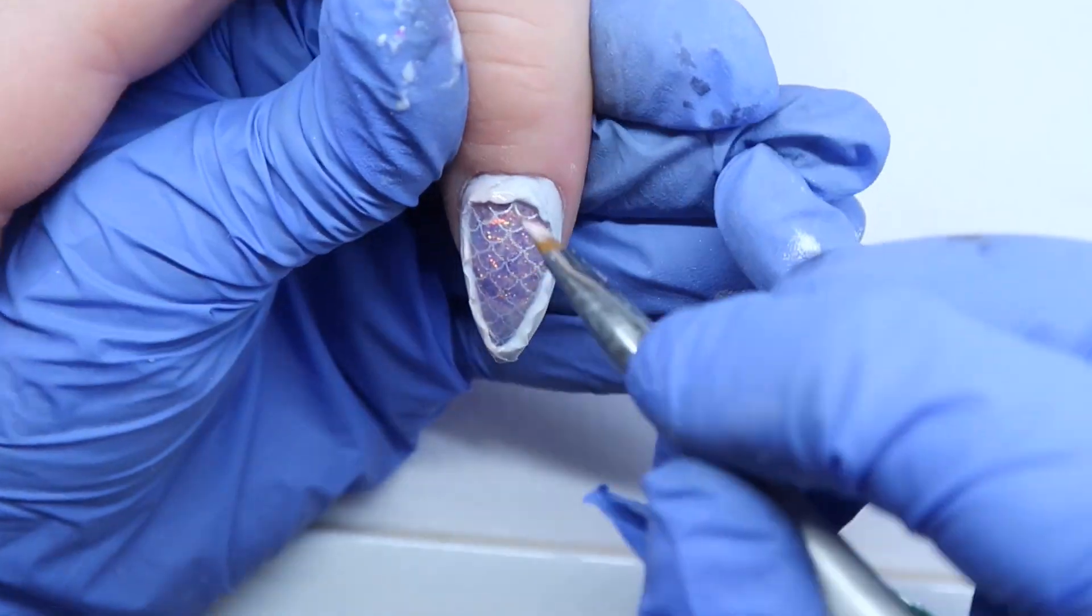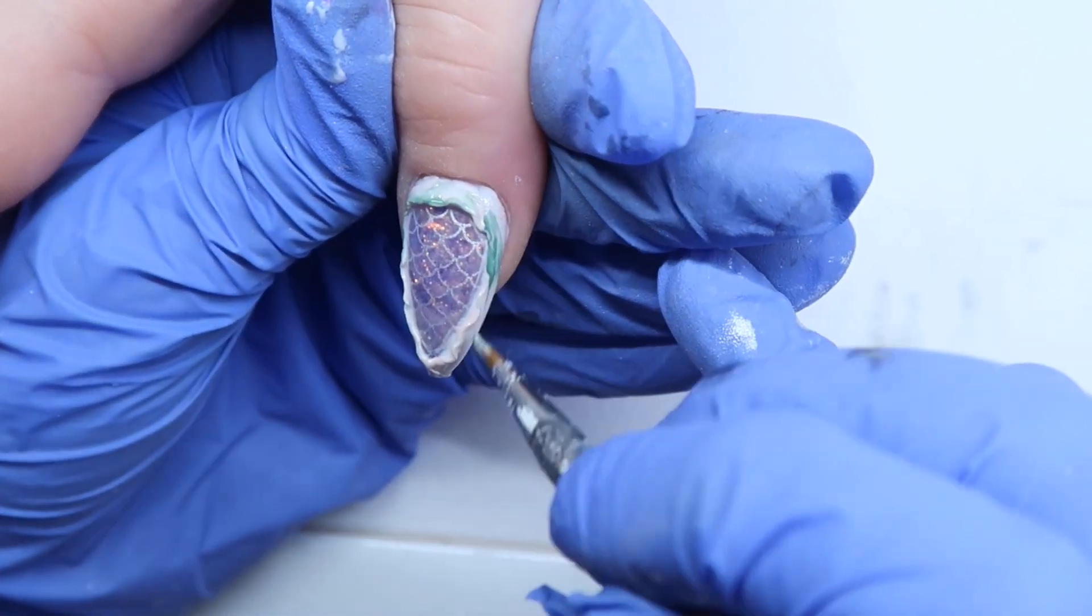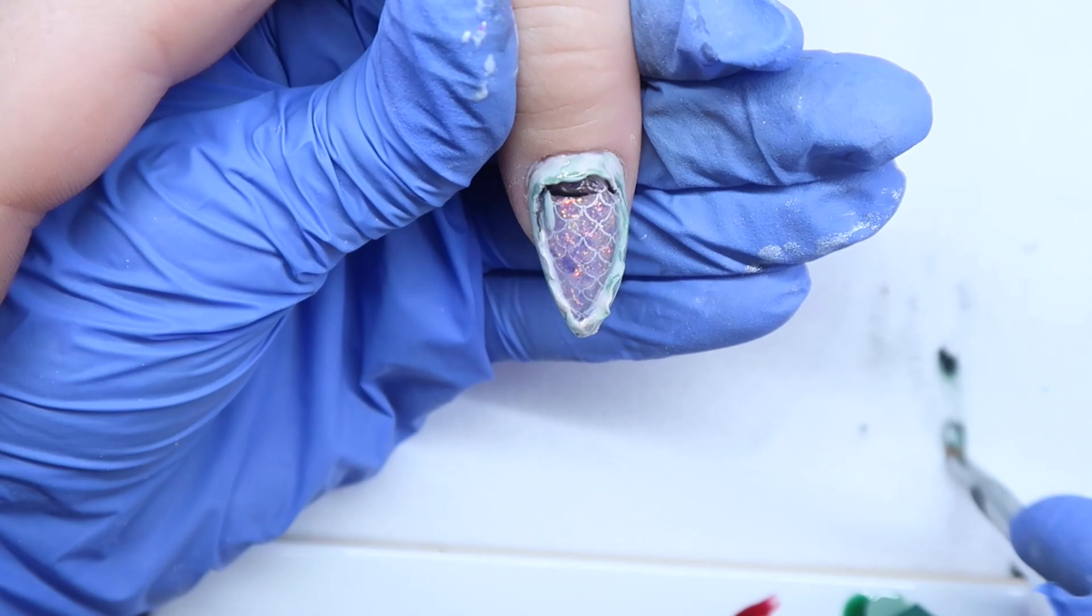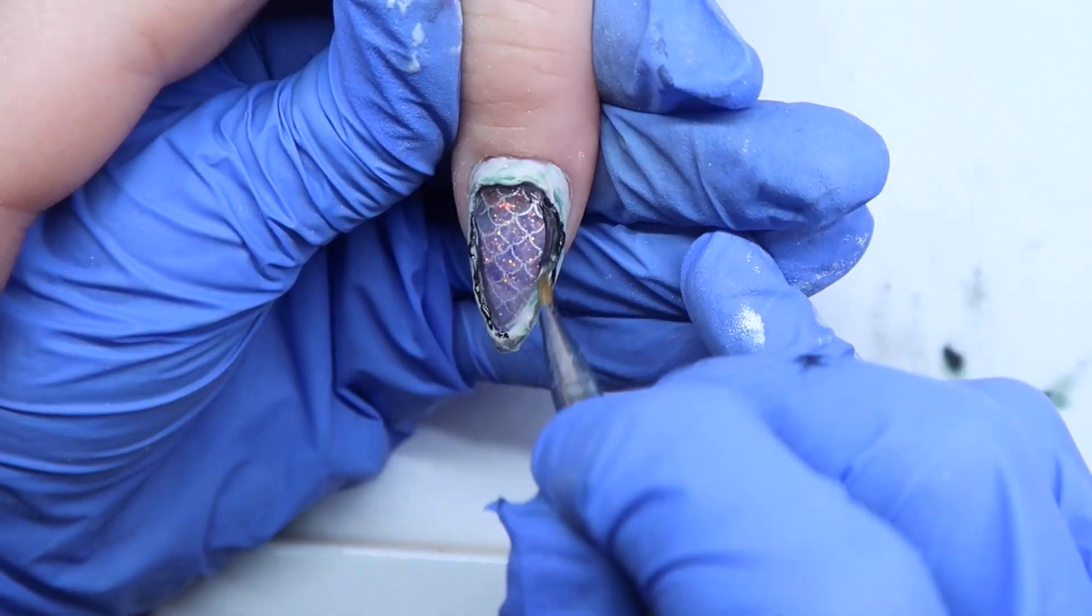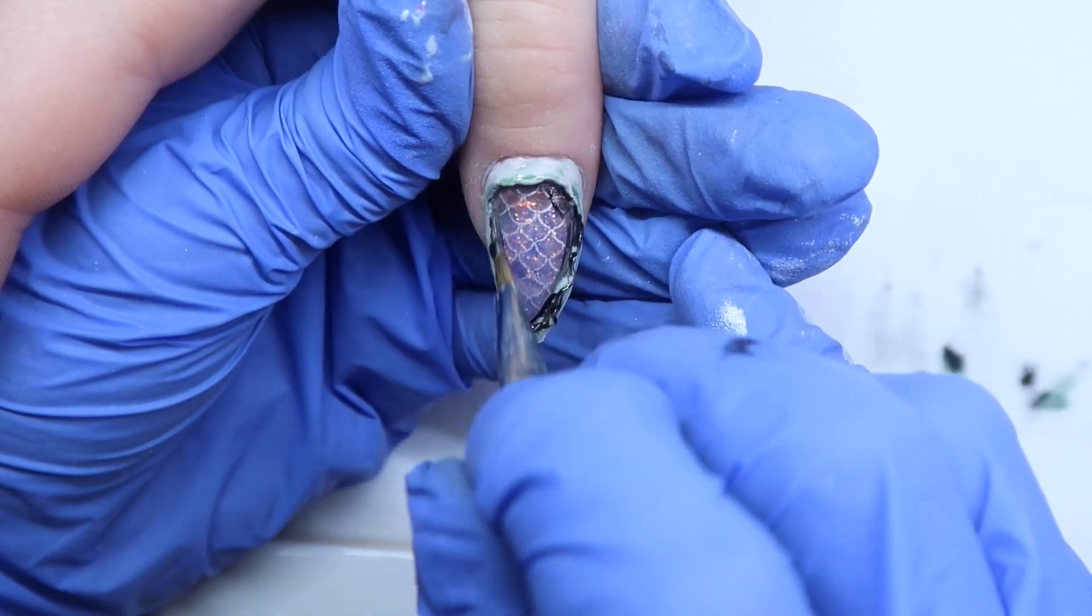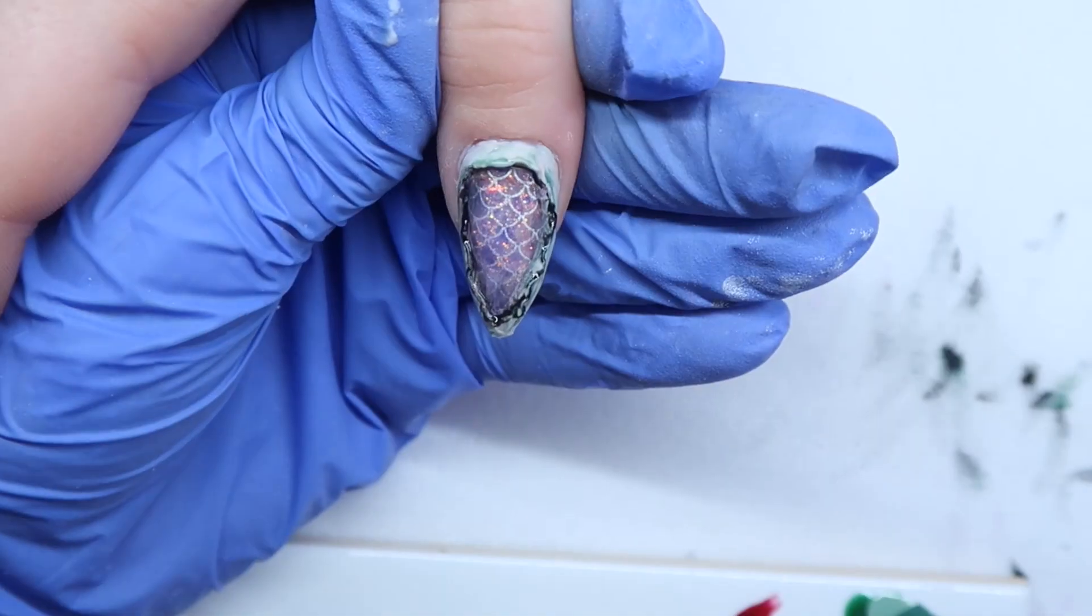So I'm just applying that nude gel polish and some of the green too. And then I am adding the black in the inside to again add that texture and dimension. So you can clean anything up that you don't want with alcohol before curing.